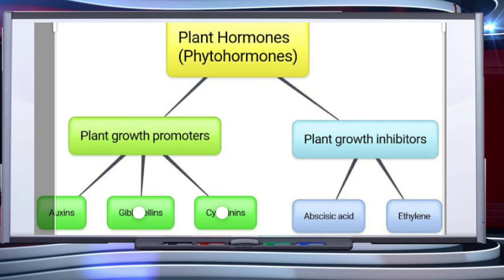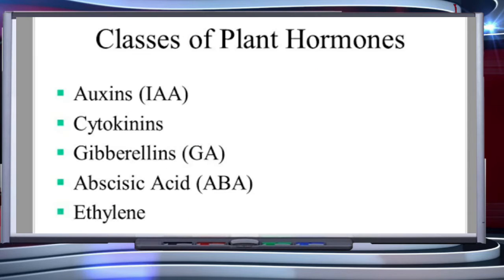Plant hormones can be divided into two main types: plant growth regulators or promoters, and plant growth inhibitors. Auxins, gibberellins, and cytokinins are considered plant growth promoters, also called PGRs. Abscisic acid and ethylene are the two inhibitors.